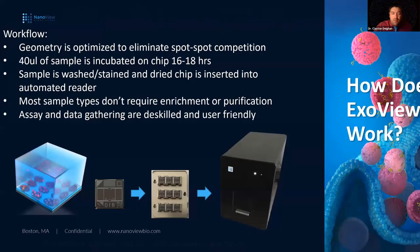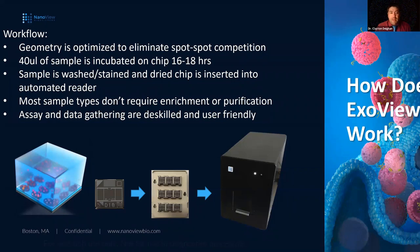The overarching workflow is the same whether you have an R100 or an R200. The chip geometry has been optimized to eliminate spot-to-spot competition, so spot replicates probe separate sets of particles. We use about 40 microliters during incubation — often diluted, so typically just one to two microliters of actual sample. The sample is then washed, stained, and read by the automated reader. Data gathering is completely automated, and many sample types don't require enrichment or purification.